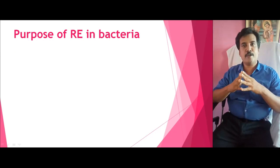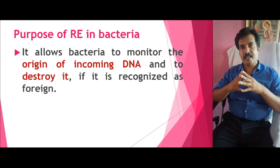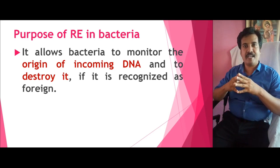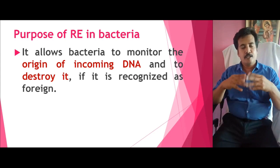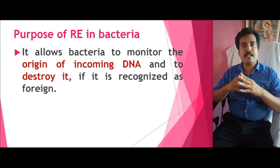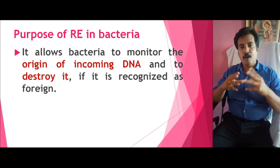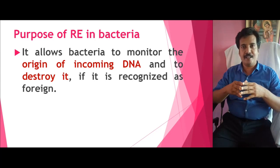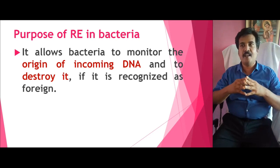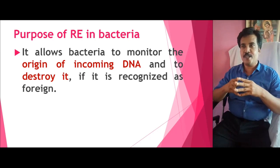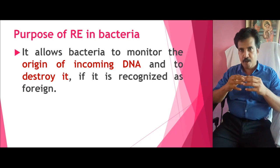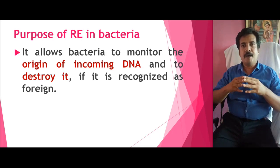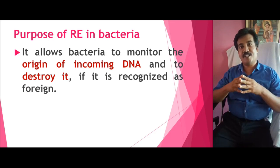What was this enzyme actually doing in the bacteria? The purpose of restriction endonuclease in bacteria is that it works as a defense mechanism against invading viral genetic material. For example, if a bacteriophage infects a bacterium, it inserts its genetic material into the bacteria, integrates into the host cell, develops into many viral particles, and causes lysis of the bacteria. To protect itself, the bacteria produces restriction endonuclease, which finds the incoming DNA and destroys it by cutting at a specific location, thereby protecting the bacteria from infection.